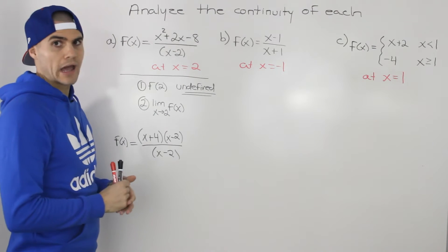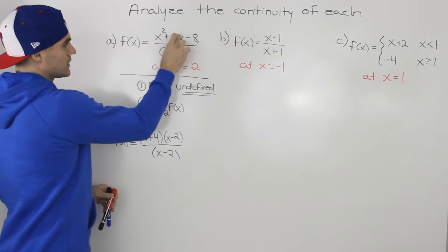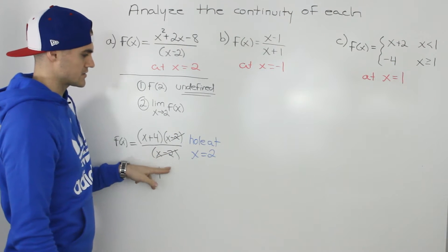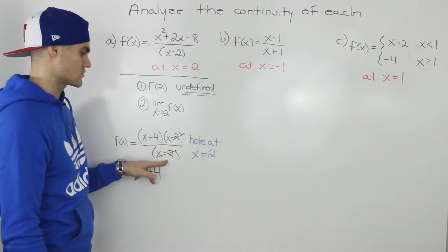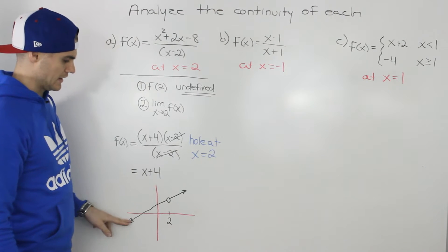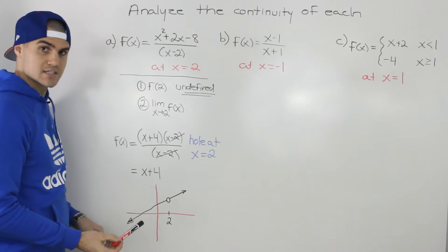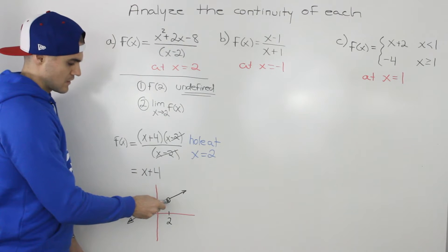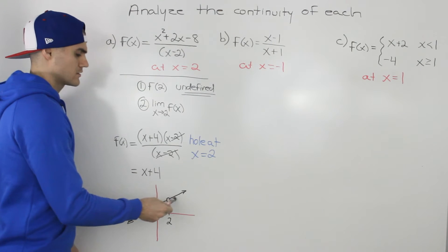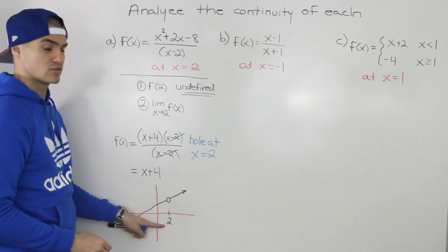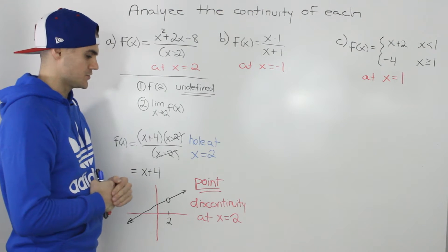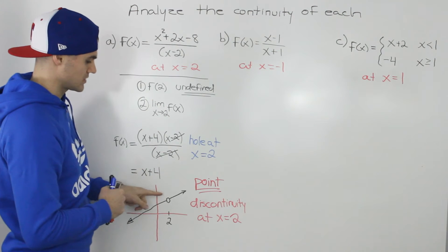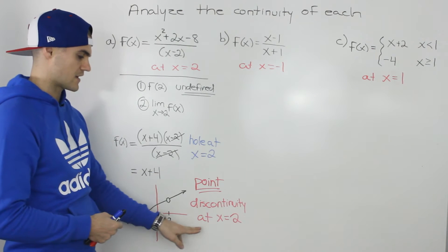Let's show in more detail what that looks like. We can factor the numerator into x plus 4 times x minus 2, so the function simplifies to x plus 4 after the x minus 2 cancels out. There's going to be a hole at x equals 2 because those factors cancelled. So the graph is just the line x plus 4 with a hole at x equals 2. If you trace a pencil through the function from negative infinity, at x equals 2 you have to lift the pencil off the paper — it's discontinuous there. This type of discontinuity is called point discontinuity, which occurs whenever a function is discontinuous at a certain x value because of a hole.